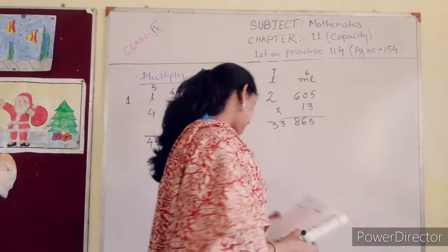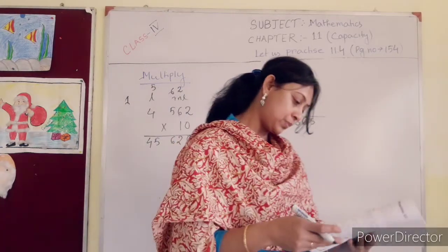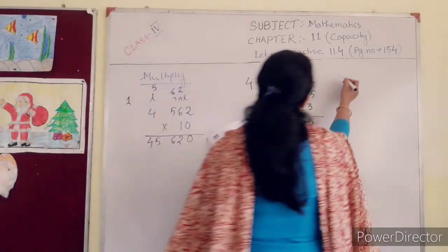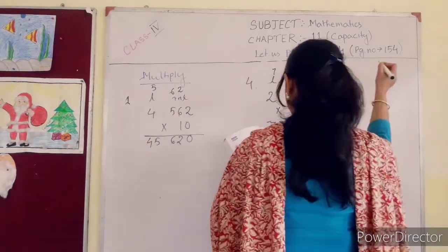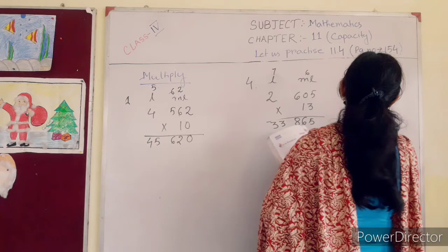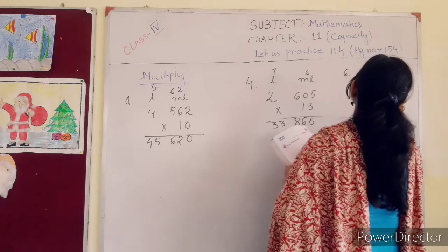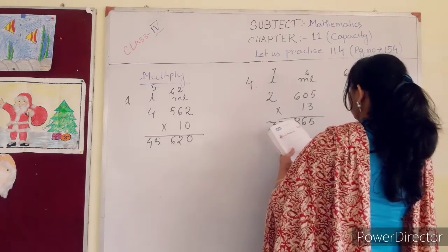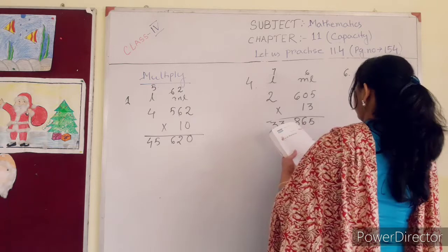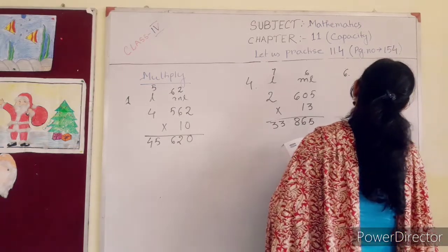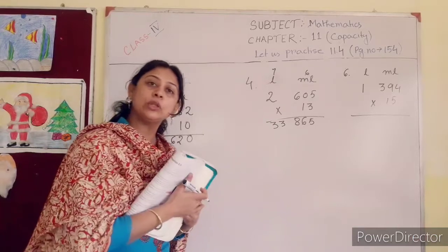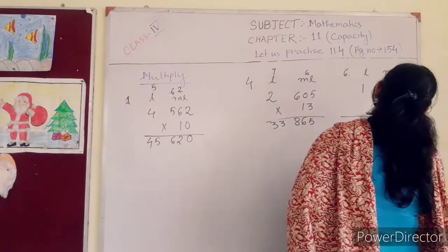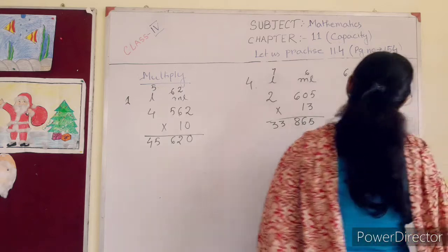Now number 6. Liter, milliliter. 1 liter, 394 milliliter. Multiply it by 15. All of you know the table of 15. 15 into 4 is 60. 6 is in your hand.